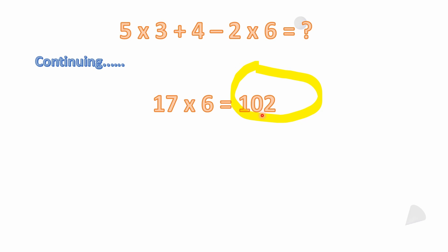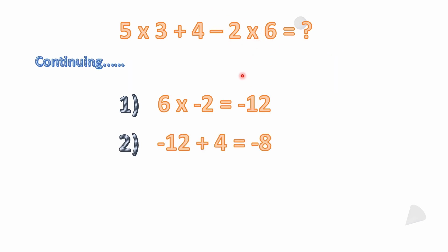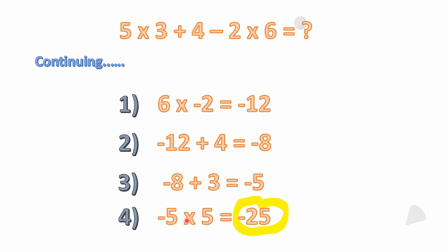He then tried working the problem from right to left. Starting with six times negative two gives negative twelve. Then negative twelve plus four is negative eight. Then negative eight plus three is negative five — remember, we're going right to left. Finally, negative five times five gives negative twenty-five.